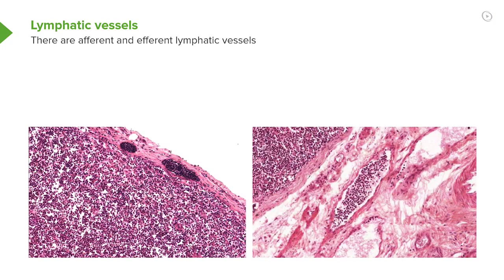Here in this lymph node, lymphocytes have passed out of the vascular system, gone through the lymph node, and then they leave the lymph node through lymphatic vessels. Those lymphatic vessels actually pass through a chain of lymph nodes. Here you see a lymph vessel arriving at a lymph node, and it's full of lymphocytes that are on their way back to the vascular system.